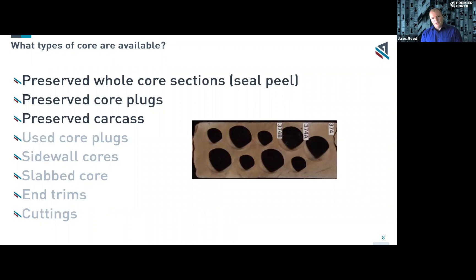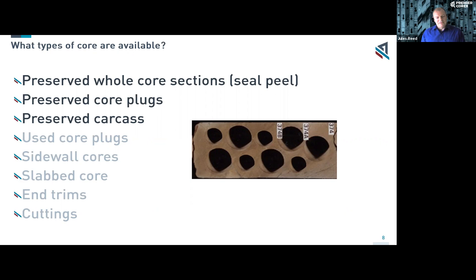For preserved core plugs, the process is essentially the same: we wrap the sample in an oil-resistant plastic film first, then aluminium foil, then into wax to seal it off from the atmosphere and preserve the contents. When using whole core sections and taking plugs from them, you may end up with something where several samples have already been taken. There's not a lot of rock material remaining — we call that the carcass — and it would normally be re-preserved after plugs have been taken. There may still be material available for various types of testing.